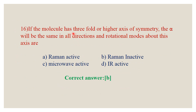Question number 16: If a molecule has a 3-fold or higher axis of symmetry, the polarizability (alpha) is the same in all directions, making those rotational modes Raman inactive. For Raman activity, the sample must be anisotropic — alpha must differ in different directions. Since alpha is the same in all directions here, rotational vibration modes are Raman inactive. The correct answer is B.